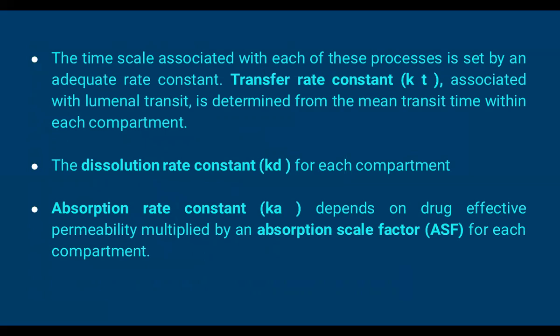The time scale associated with each of these processes is set by an adequate rate constant — we call it transfer rate constant k. The rate constant is associated with lumen transit determined from mean transit time within each compartment. For the stomach, approximately 2 hours; intestine at pH 5.8–6.4 is around 3 hours; alkaline pH 7.4–7.8 is around 3 hours. So the total time for any material in the GIT is considered approximately 8 hours. The dissolution rate constant and absorption rate constant depend on effective permeability multiplied by absorption scale factor of each compartment.